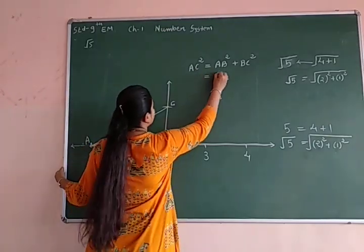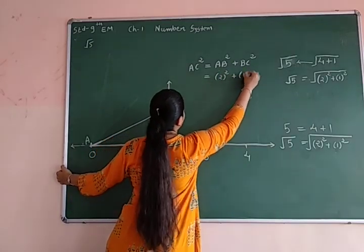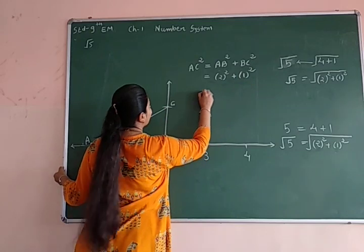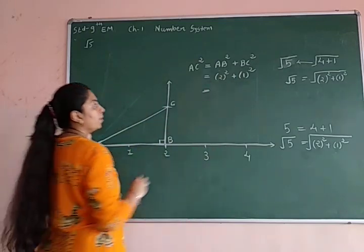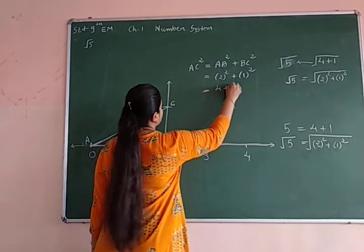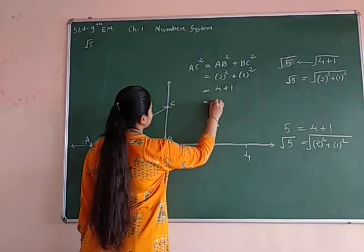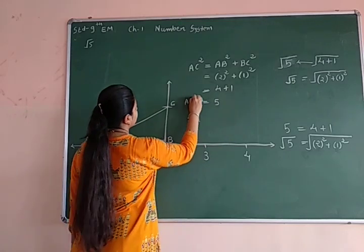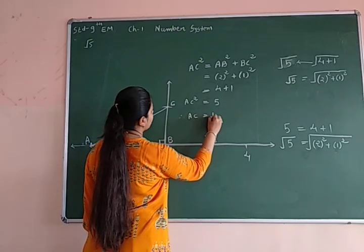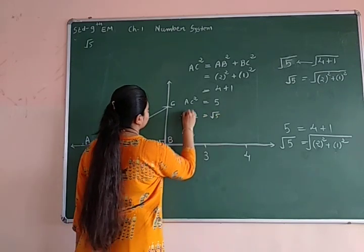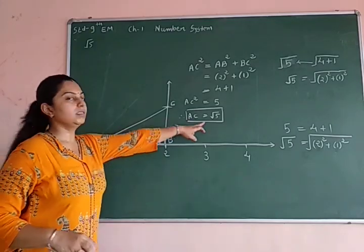AC is 2 units. So, 2 square. And BC is 1 unit. So, 1 square. Now, what it is? 4 plus 1. Now, what does it say? 5. And what does it say? 5. Here. And that's why AC is equal to AB square. 5. Here. And that's why AC is equal to AB square. AC is root 5.